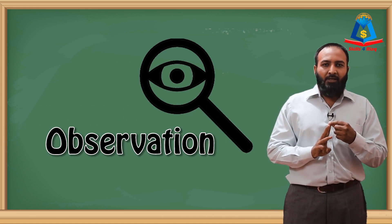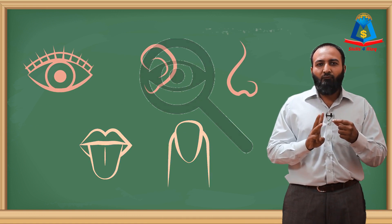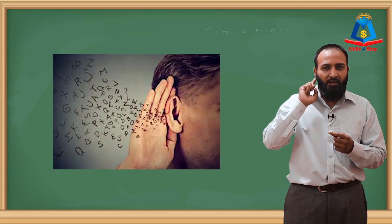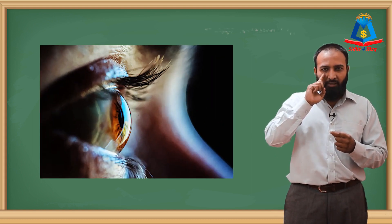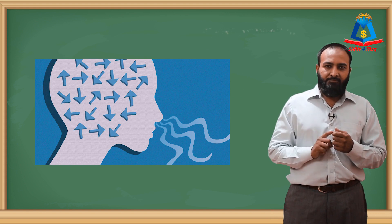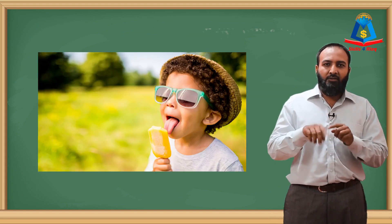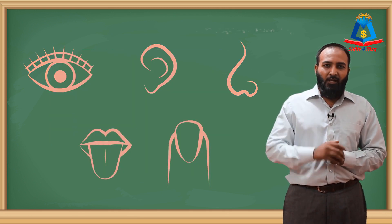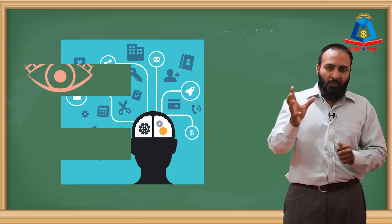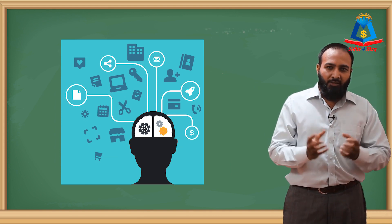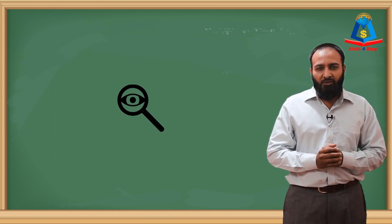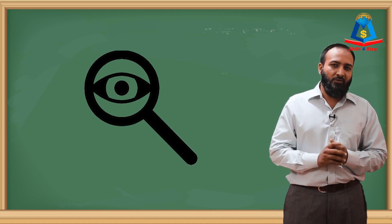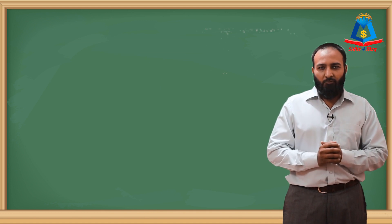As you know, we have five senses: hearing, vision, smell, taste, and touch. Using these five senses, we collect information from our surroundings. This collection of information is called observation. So the first thing I mentioned in the definition of science — observation — is using our five senses to gather information.